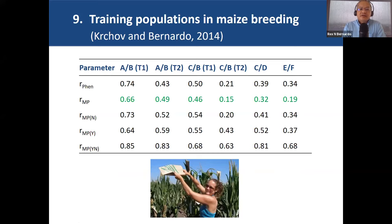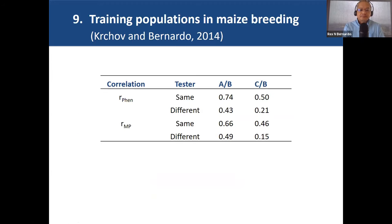Lisa Marie Kirchhoff did further investigations on training populations in maize. She found that without cross-validation across individuals, predictive ability is upward-biased — which was known — but also found that without cross-validation across years or environments, we may also inflate predictive ability. This told us that cross-validation across both individuals and environments is important, though the number of environments can be limiting. She also found that testers are important: using different testers decreases predictive ability.